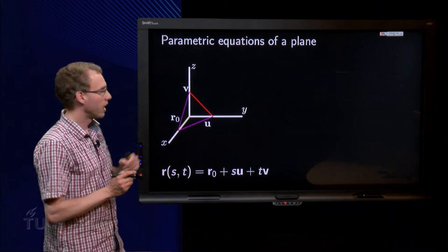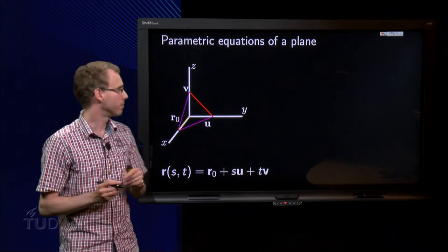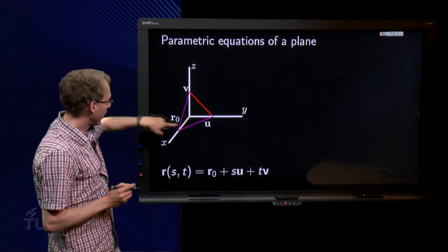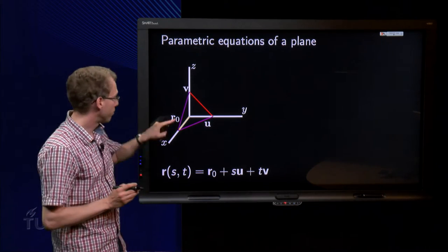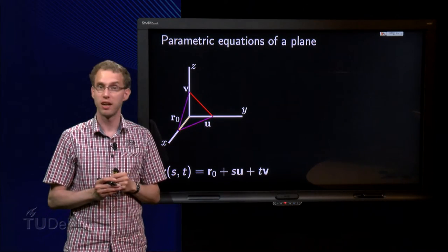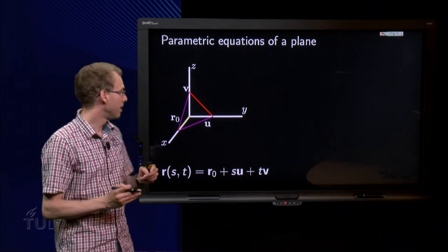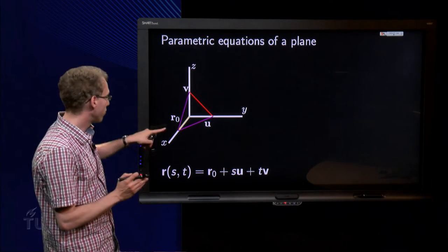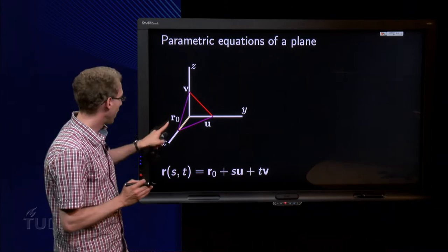How does it look? Here we have our plane in R3, the red one. Again, we have a vector from the origin to the plane, R0, just as we had with the lines. But now we have a plane, so we have two vectors in the plane, U and V.